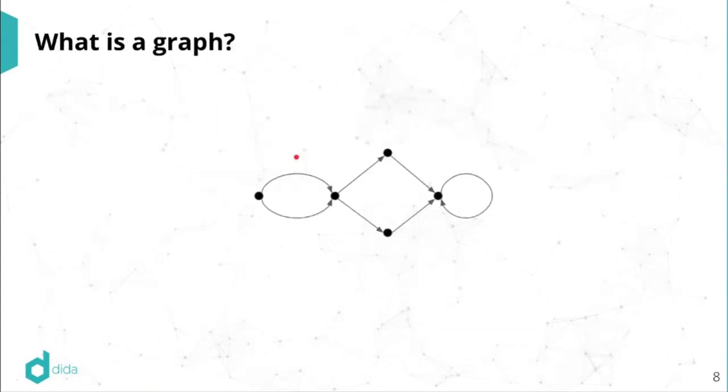All right, very good. So what is a graph? A graph is just a picture like this one, which you make out of dots, which we call nodes or vertices and arrows connecting the dots. So those we call edges or links or relationships.